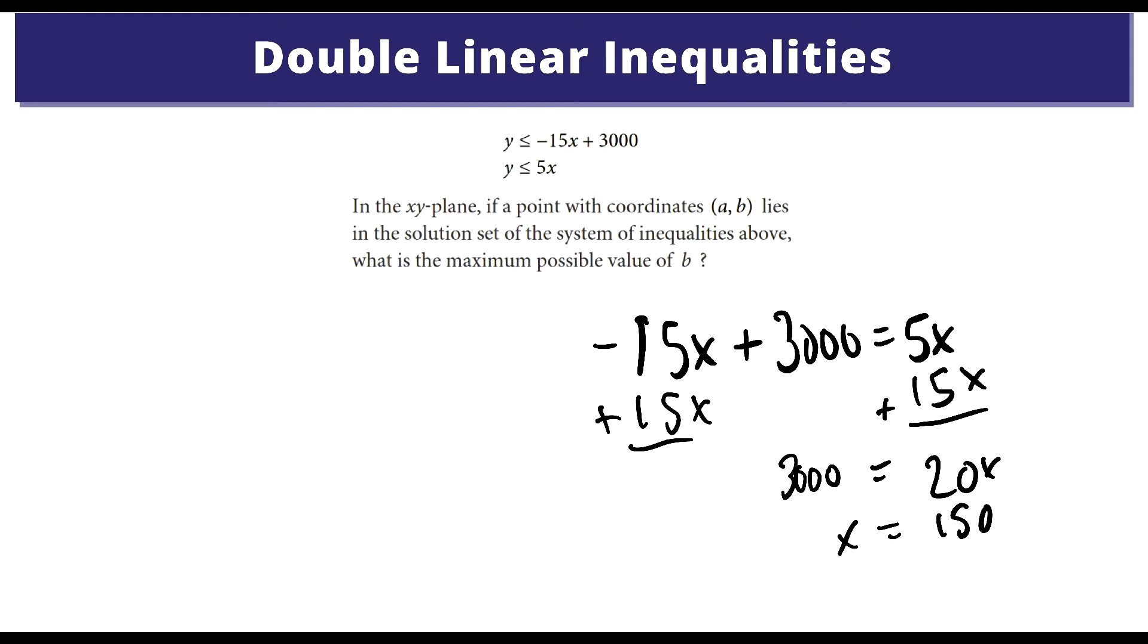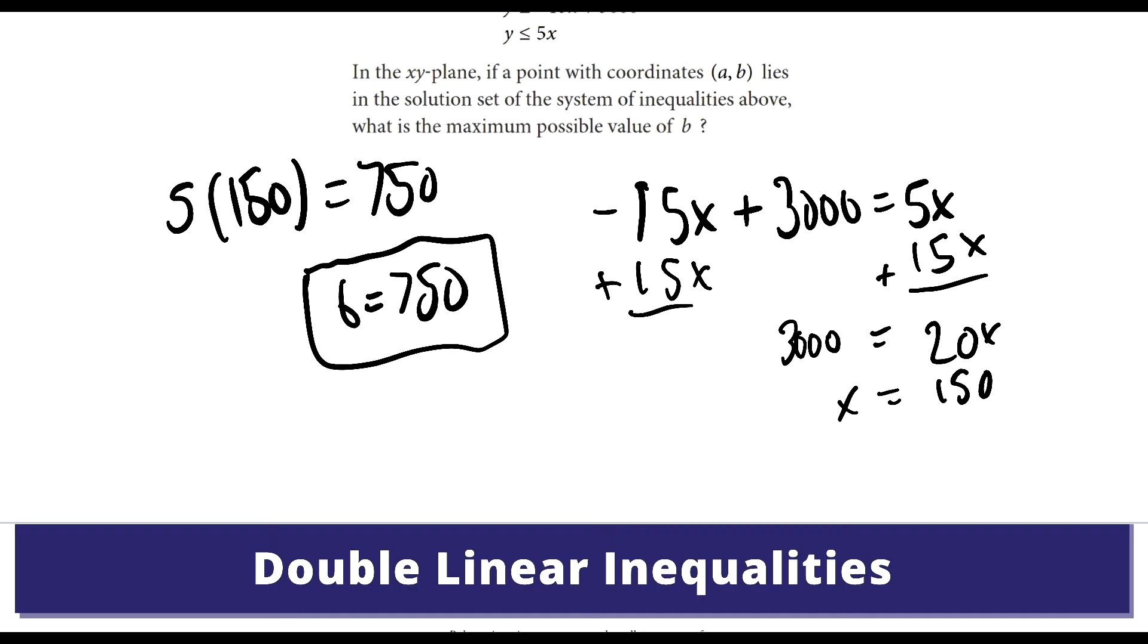Now we need to plug that number back in to find the B value, because the B value represents the y. So we do 5 times 150, and that will leave us with 750 as the B value. So B equals 750.